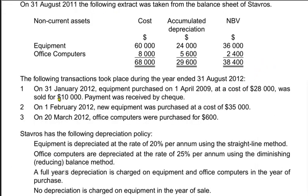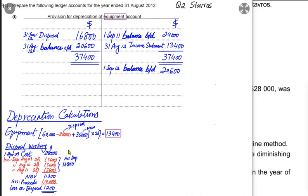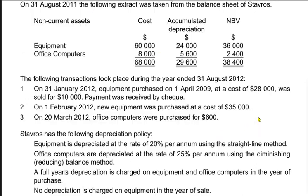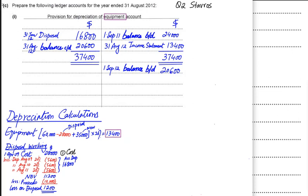We deduct total depreciation of 16,800 from the original cost of 28,000 to arrive at a net book value of 11,200. We sold the asset for 10,000 — less than book value — so the difference is a loss on disposal of 1,200. If we had sold it for more than 11,200, say 12,000, the 800 difference would be a gain. Since the examiner has asked us to prepare a disposal account, we proceed to make the journal entries first.